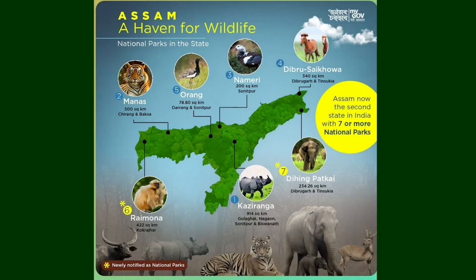The first question is about the national park. Our national parks include: Kaziranga, Manas, Nameri, Dibru-Saikhowa, Orang, and Raimona.